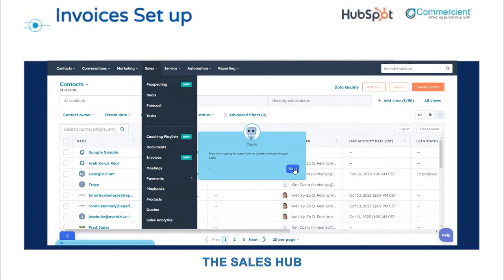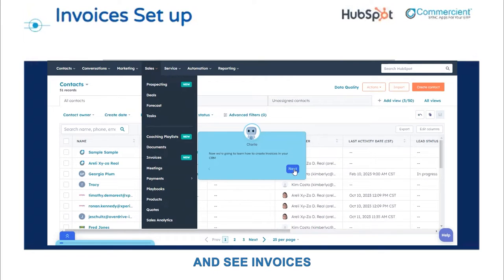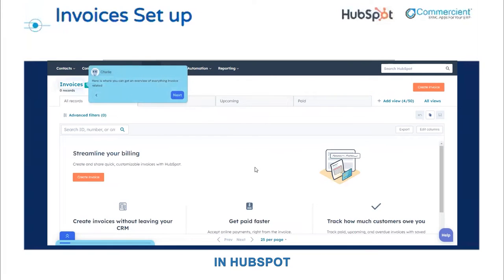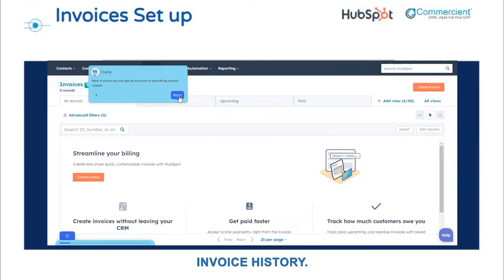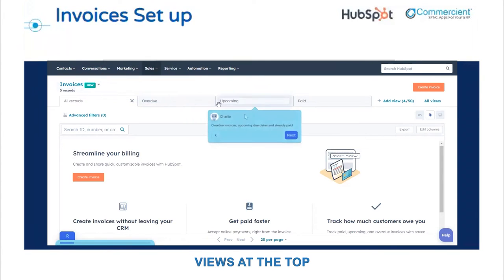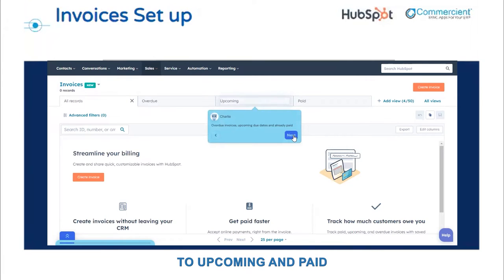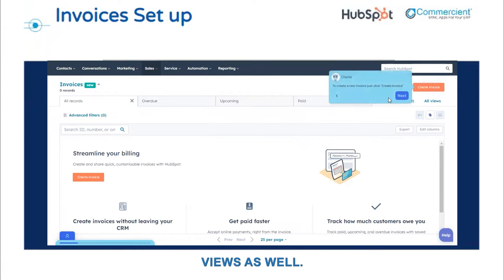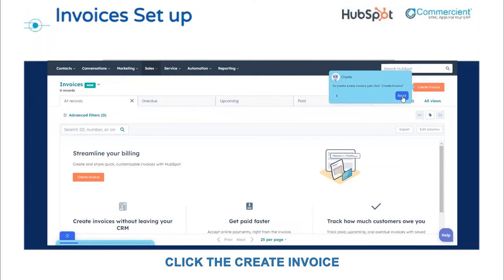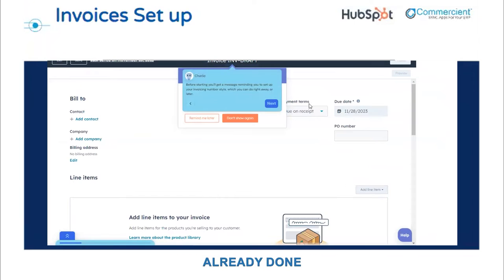First, you need to open Sales Hub and click on the invoice object. Note that you can create and see invoices from multiple areas of HubSpot. Once you get into the invoice object, you'll be able to see all of your previous invoice history. There are also some pre-built views at the top that allow you to view the data by overdue, upcoming, and paid. To the right, you can also create your own custom views. When you're ready to create the invoice, click the create invoice button in the top right. If you haven't already done so, you may get a message about setting up your invoice number — you can do that now or later.